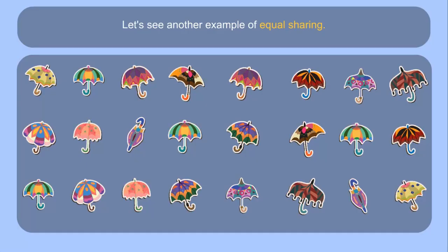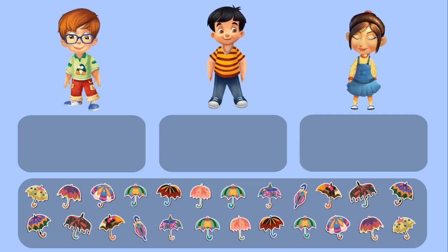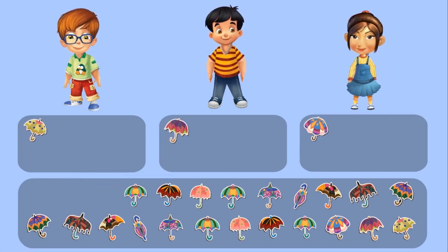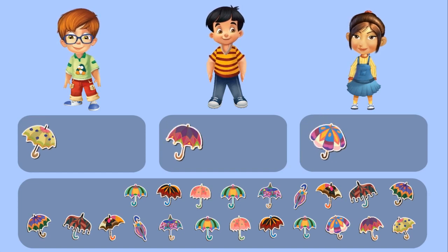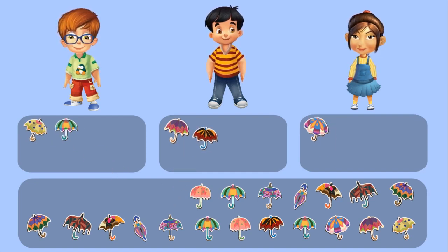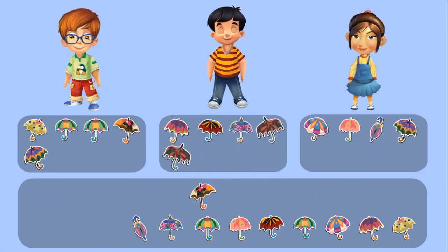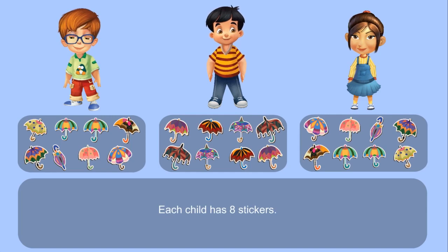Let's see another example of equal sharing. We can equally share 24 stickers among 3 children: Neil, Sid, and Alicia. We give 1 sticker to Neil, then 1 to Sid and 1 to Alicia. We have shared 3 stickers out of 24 stickers. Similarly, we share the stickers one by one. After sharing, we see that each child has 8 stickers.